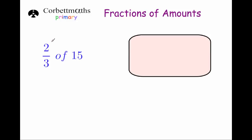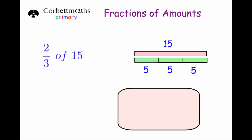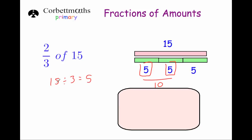But what if the fraction we want to find is something else? Maybe like 2 thirds of 15. We know that a third of 15 is 5, because 15 divided by 3, shared equally amongst 3, each person gets 5. Well, if I want 2 thirds, that would be 10 altogether. A quick and simple way of doing that is to get our 15, divide it by 3 to work out what a third is — which is 5 — and if we wanted 2 thirds, that's 2 lots of 5, so you just times it by 2.